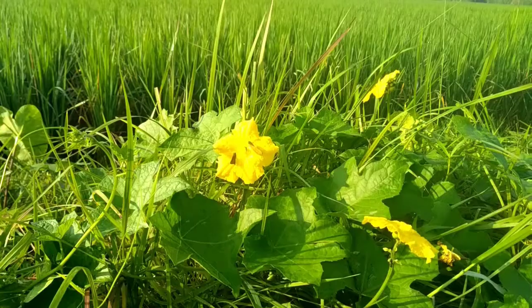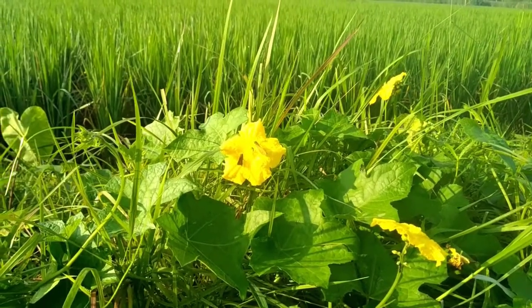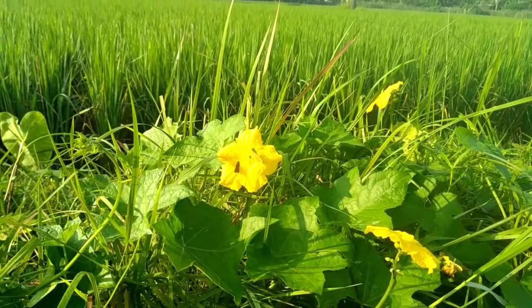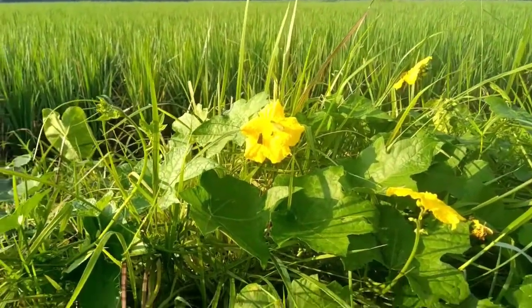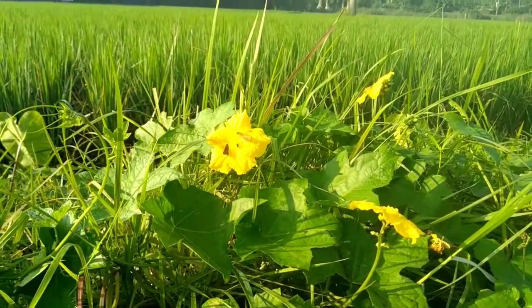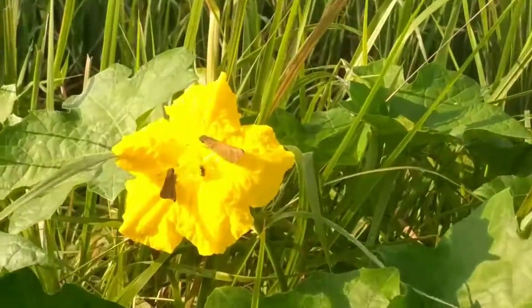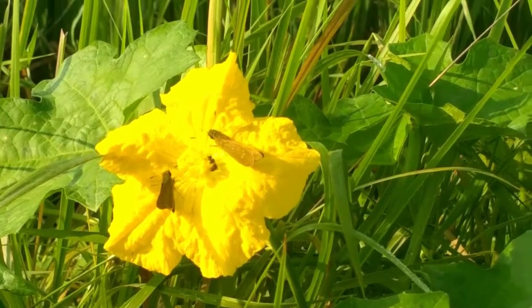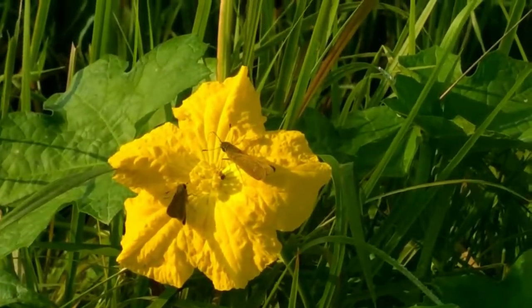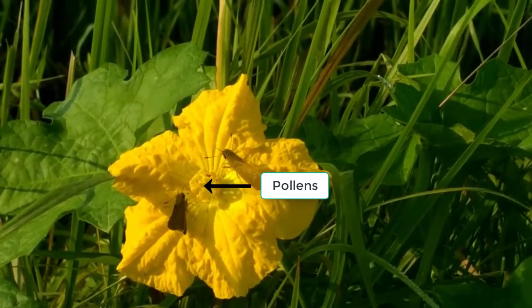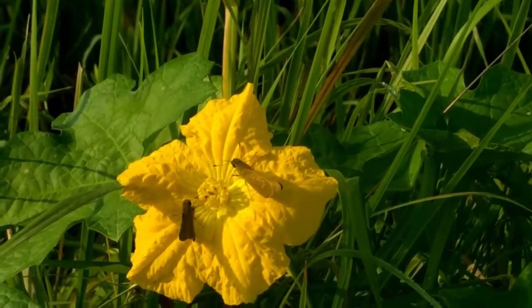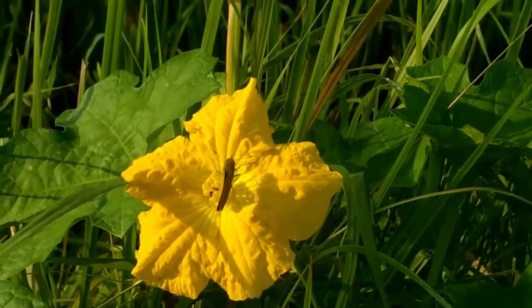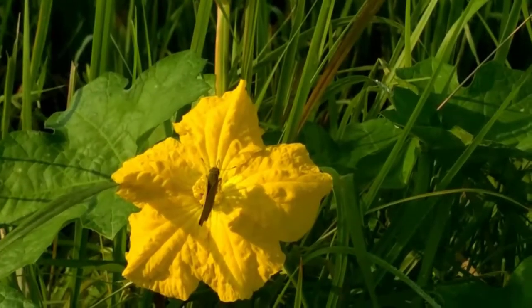This is another example of mutualism. In this green field, I found a beautiful yellow flower. If you take a close look into the flower, there are wasps and a bee that is taking nectar, benefiting in the form of nutrition. In the process, these pollens that attach to the feet of these wasps can be taken to the next flower, helping in pollination. So both are mutually benefited.